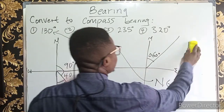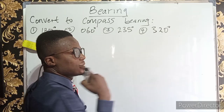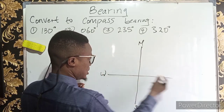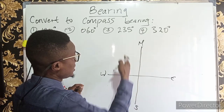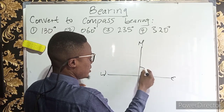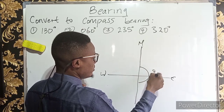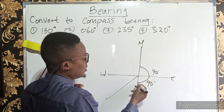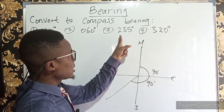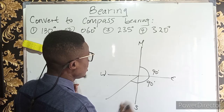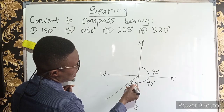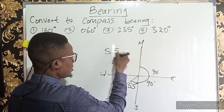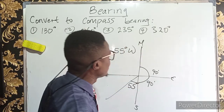For 235 degrees: draw north, south, west, east. Turn clockwise from the north — 90, then 180 degrees. Touching the west line would be 270, which is more than 235, so 235 is in the third quadrant. 235 minus 180 gives 55 degrees. This 55 degrees is attached to the south and it is in the southwest region. The answer is south 55 degrees west, which is 55 degrees west of south.